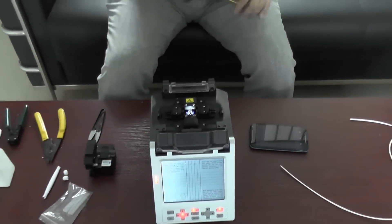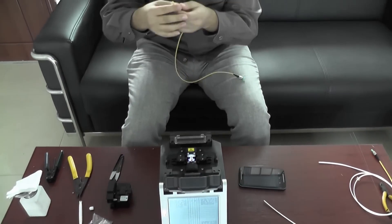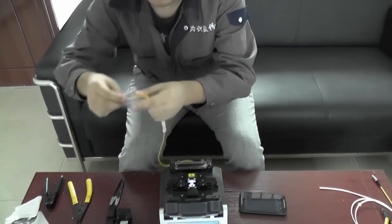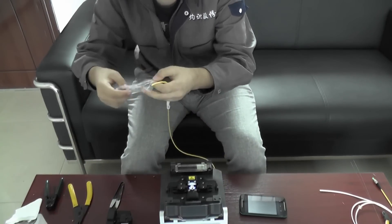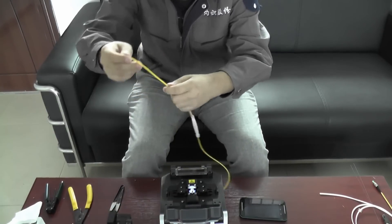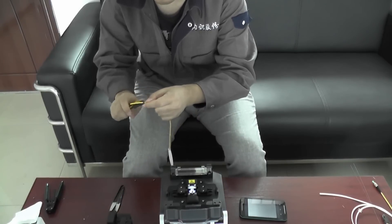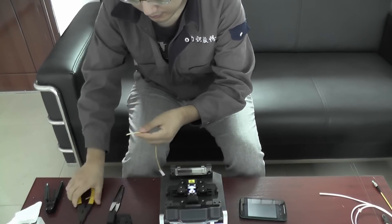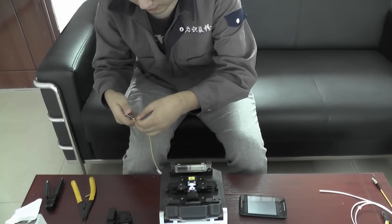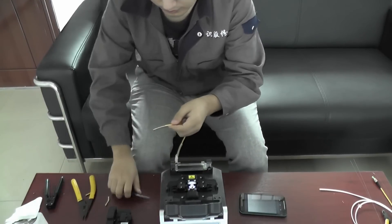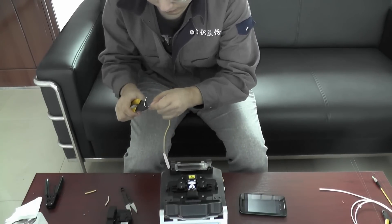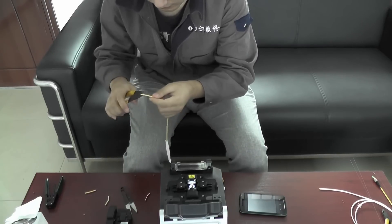Here, we use the normal splicing. There is the jump fiber. We should use the protecting tube. And this one, shrink tube. Strip it.